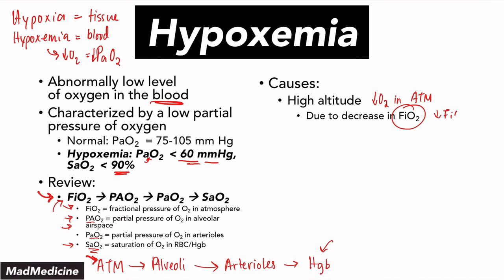If FiO2 goes down, remember this pathway: everything else is going to go down because there is no oxygen available to go into your alveoli, into your arterioles, and to saturate your hemoglobin. Because you're affecting it upstream, you're going to affect everything downstream as well in this pathway. That is one cause — very simple.